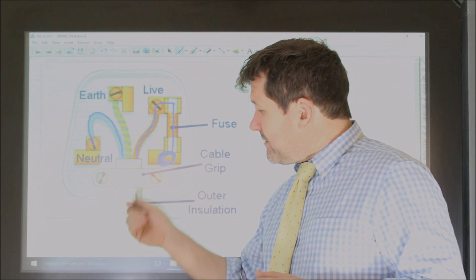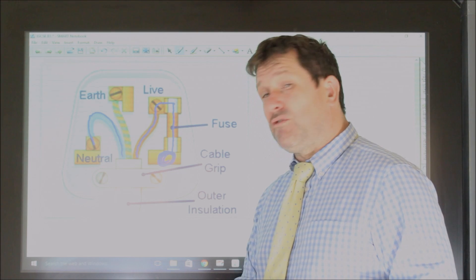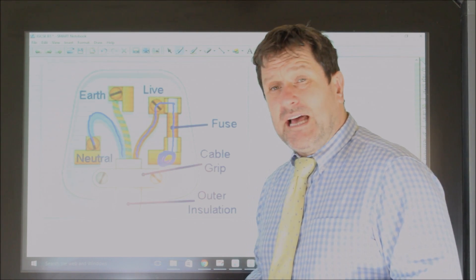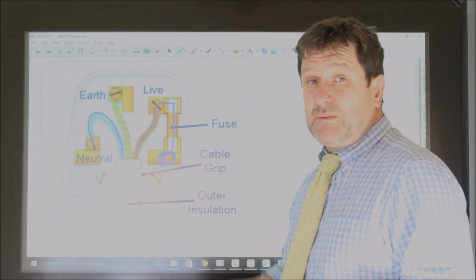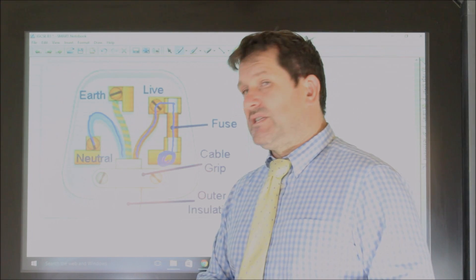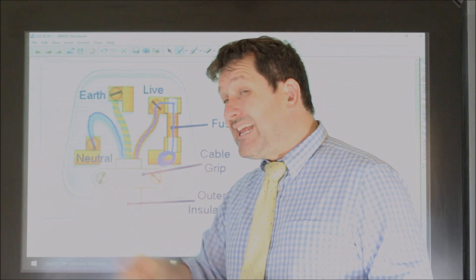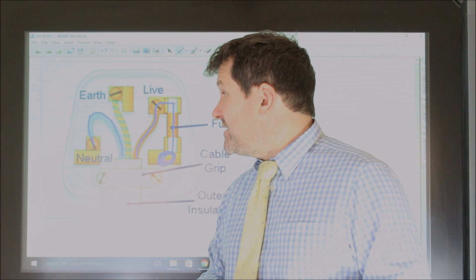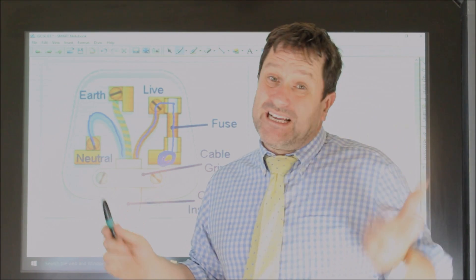You also have, normally white, protective insulation around these coloured wires in order to prevent electrocution. The coloured wires themselves are covered in plastic again for insulation, and they are given these colours so you can identify them.